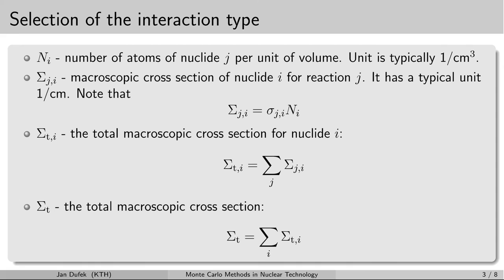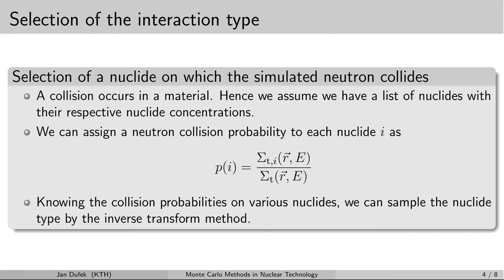In one of the previous lessons we derived the physical meaning of 1 over sigma_t — you may remember that we derived its meaning as the mean distance between collisions.